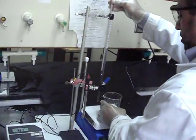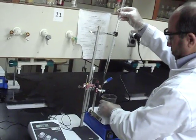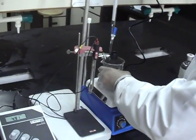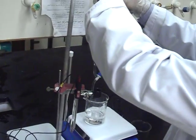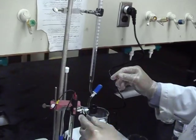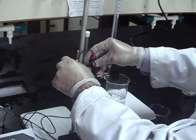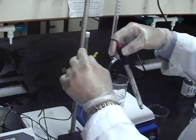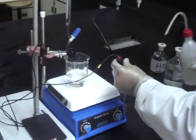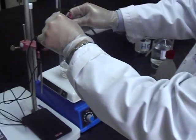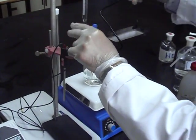After that, adjust your system so that your burette is a little bit inside your solution, inside the beaker. And your pH meter, after you rinse it, has to be inside the solution as well.